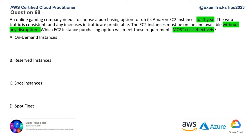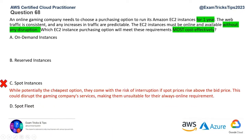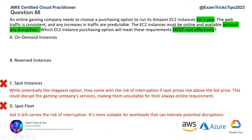The keyword 'without any disruption' is the main one — it means you cannot use spot instances, because spot instances can be interrupted. If somebody bids higher than you, your instance can be taken away. So that option is gone. Option D — spot fleet — is also ruled out for the same reason: spot fleet servers can be taken away if someone else bids higher, so the risk of disruption is always there. The second keyword is 'one year.'